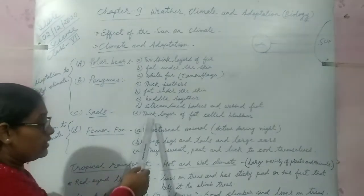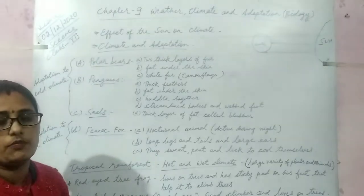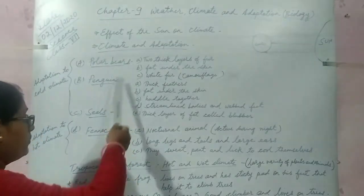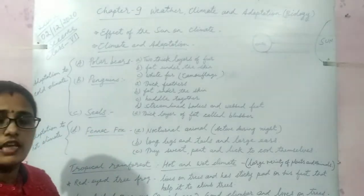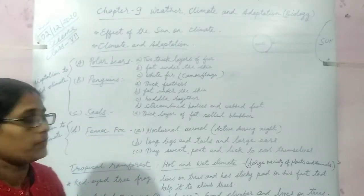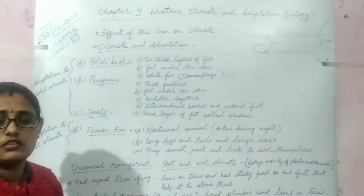The next is seals. It also has a thick layer of fat called blubber. Polar bears, penguins and seals, these all can keep themselves warm by following these adaptations.